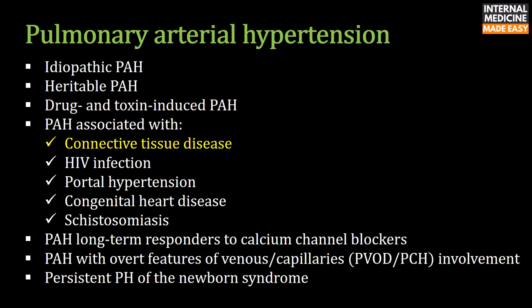Pulmonary arterial hypertension develops in approximately 10% of patients with systemic sclerosis. Other forms of connective tissue-associated PAH have been less well studied; however, association with systemic lupus erythematosus has a better prognosis than systemic sclerosis.